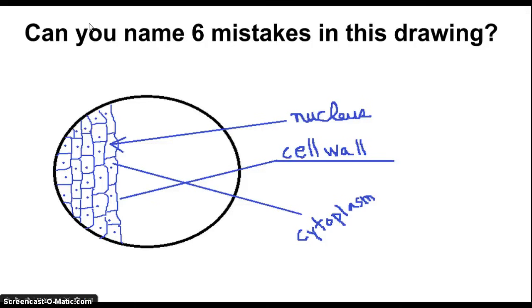Let's see how you did. Did you get all six mistakes? We'll start with nucleus. The word nucleus is written in cursive. We want to make sure we print all of our labels.